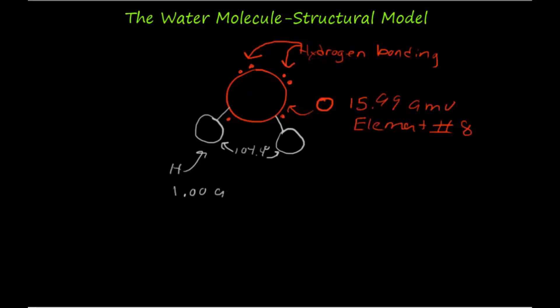Hydrogen has a weight of 1.00 grams in atomic mass units and corresponds to element number 1 of the periodic table. Hydrogen has only one electron and therefore only one electron available in its outer shell, for which I will change colors and place near the hydrogen atom here and here.